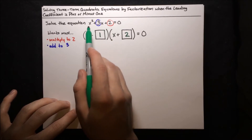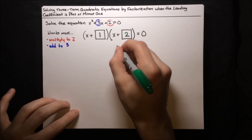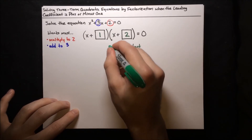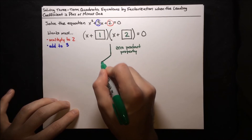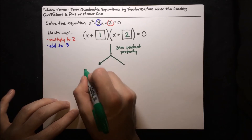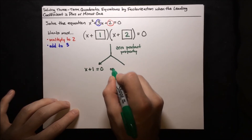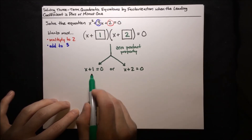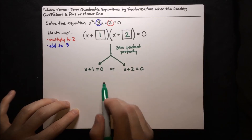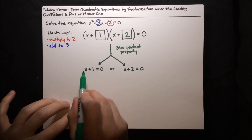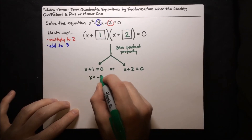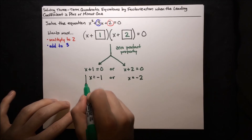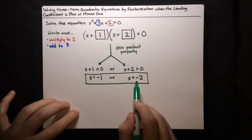Now we've factorized the left-hand side, and we can use the zero product property. Since these two factors multiply to 0, one of them must be 0. So we have two possibilities: x plus 1 equals 0, or x plus 2 equals 0. Solving these independently: x plus 1 equals 0 gives x equals negative 1, and x plus 2 equals 0 gives x equals negative 2. Those are our solutions: x equals negative 1 or x equals negative 2.